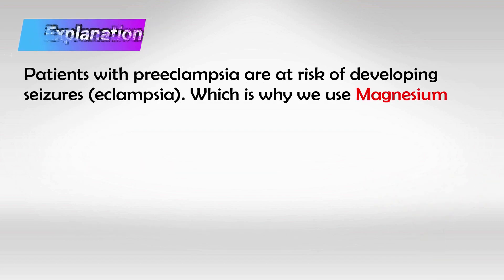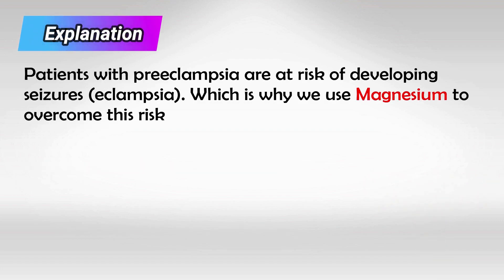Patients with preeclampsia can develop eclampsia, which is very severe seizures. This can be fatal for both the patient and the fetus. And so, to prevent eclampsia or seizures, we give these patients magnesium.